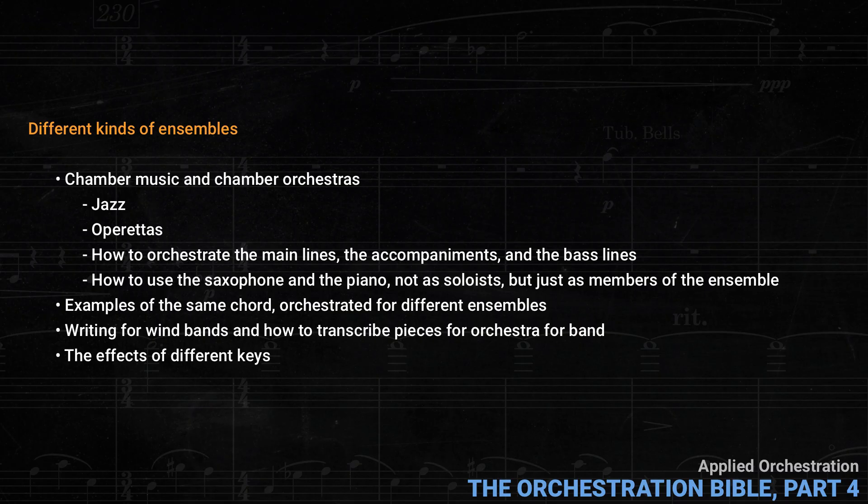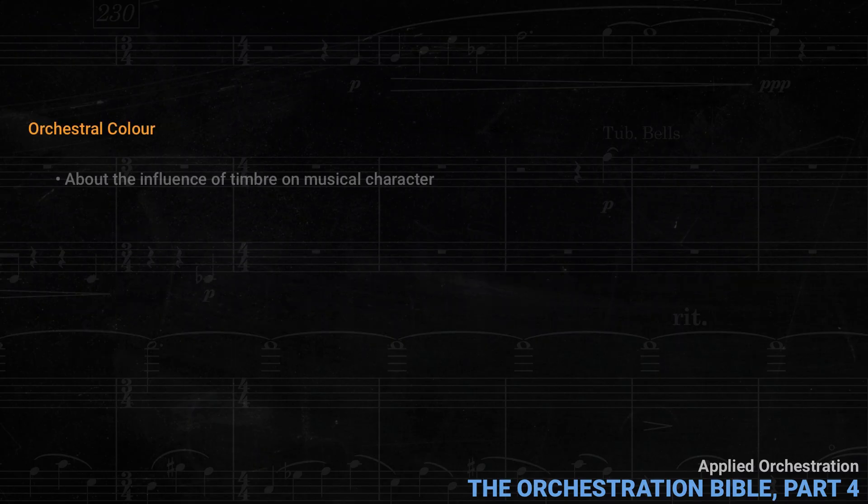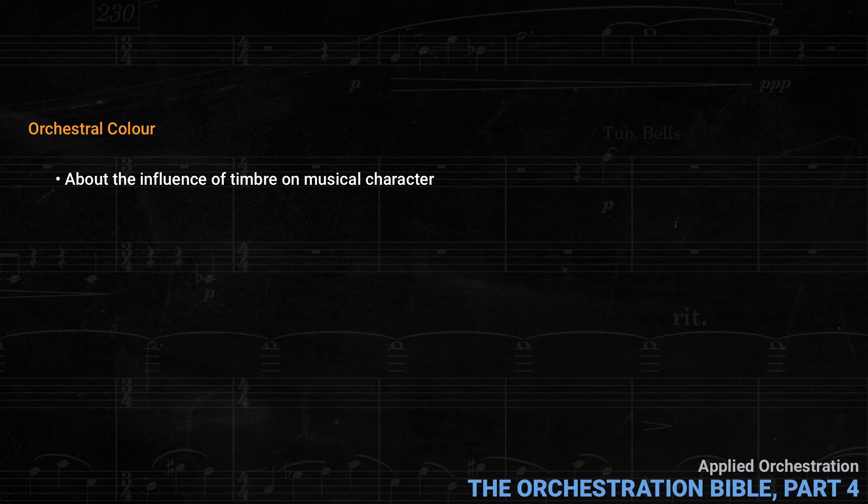For example, when the strings are playing in keys that include open strings, they're more brilliant. The final chapter in Koechlin's treatise is called Orchestral Color. This is about the influence of timbre on musical character. Of course, the other aspects of the music, like tempo, register, articulation, and so on, make a big difference as well. But there's no denying that the same melody played by the low flute or the high trumpet will have a very different character. And Koechlin always explains why the colors he's talking about are appropriate to the musical character. It's important to note that even when talking about one instrument, things like register and articulation are part of the discussion.